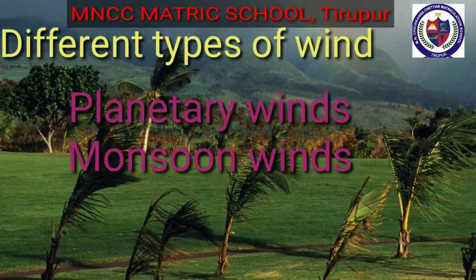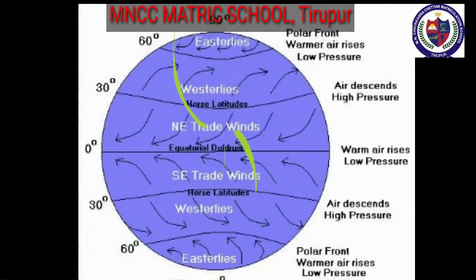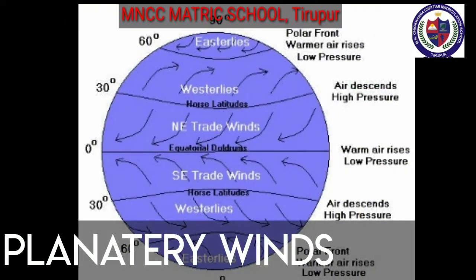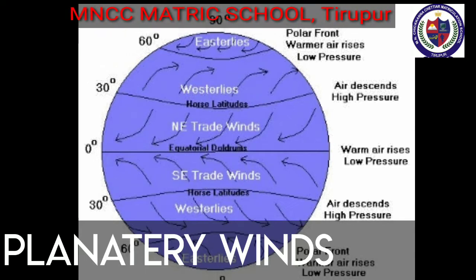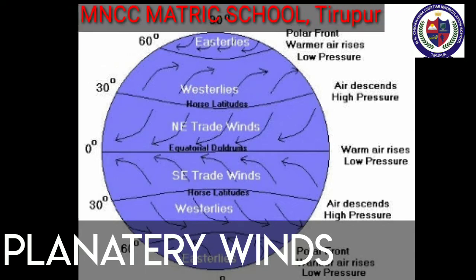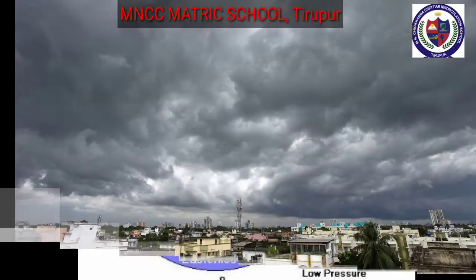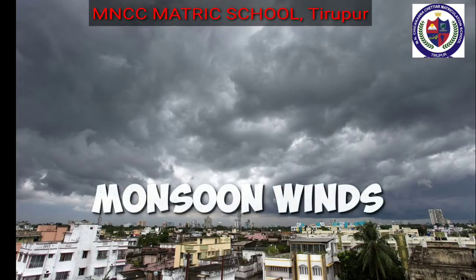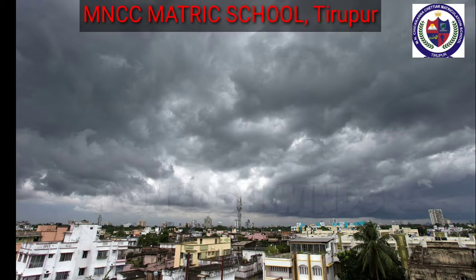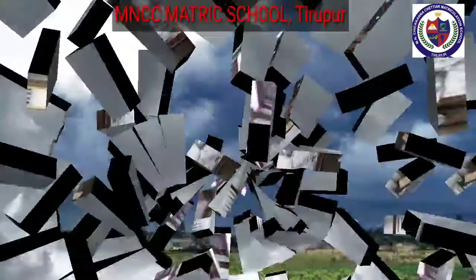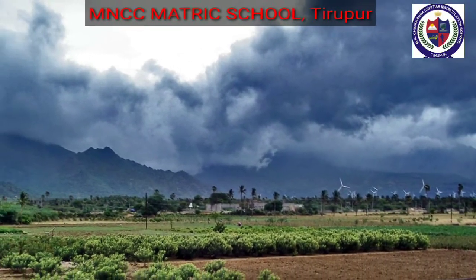Planetary winds move in the same direction throughout the year with the rotation of the earth. These are also known as permanent winds. Monsoon winds: the word monsoon is derived from the Arabic term 'mausim', which means season. Types: southwest monsoon winds and northeast monsoon winds.